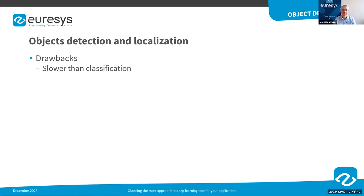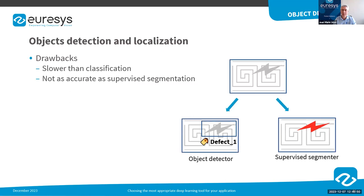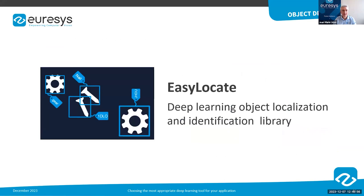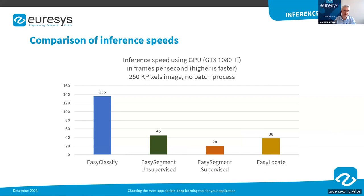However, compared to a classifier, an object detector is more or less three times slower for the same image resolution. The localization of objects in bounding boxes is also slightly less accurate than the pixel-level segmentation of a supervised segmenter. In Open eVision, the deep learning object localization and identification library is called EasyLocate.